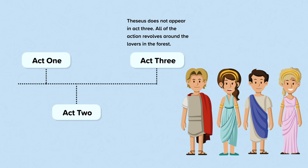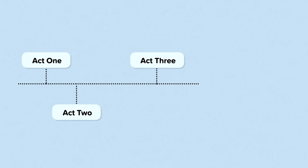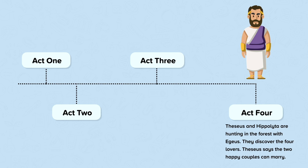In Act 4, Theseus and Hippolyta are hunting in the forest with Aegeus. They discover the four lovers, and Theseus says the two happy couples can marry.